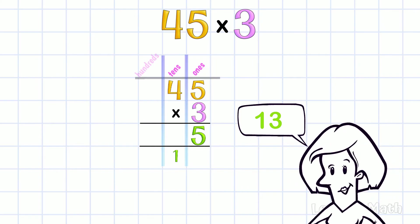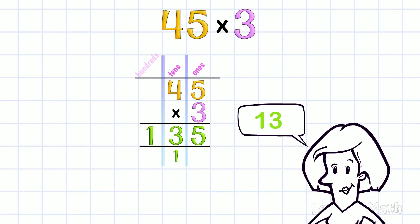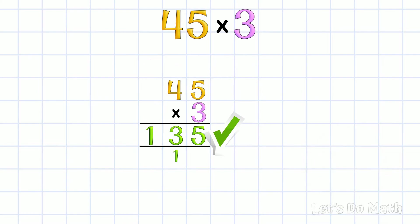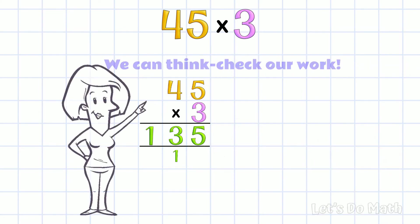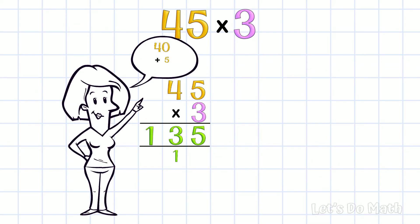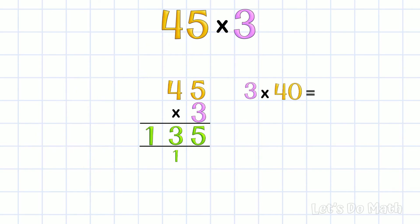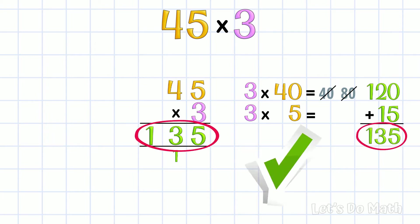There's no more digits to multiply, so I just put that 13 straight in there. And there's our answer! We can think-check our work. 45 means 40 and 5 more. We want 3 groups of 40, so that's 40, 80, 120. And 3 groups of 5 is of course 15. If I add those together, look what we get! It's a match! We got it right!